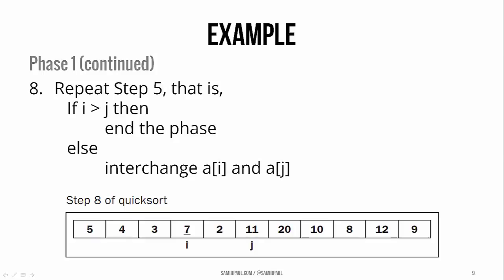In this case, they still haven't crossed yet, so we don't end the phase. And because of that, we'll swap the elements at i and j, which we know were both out of place at the beginning.